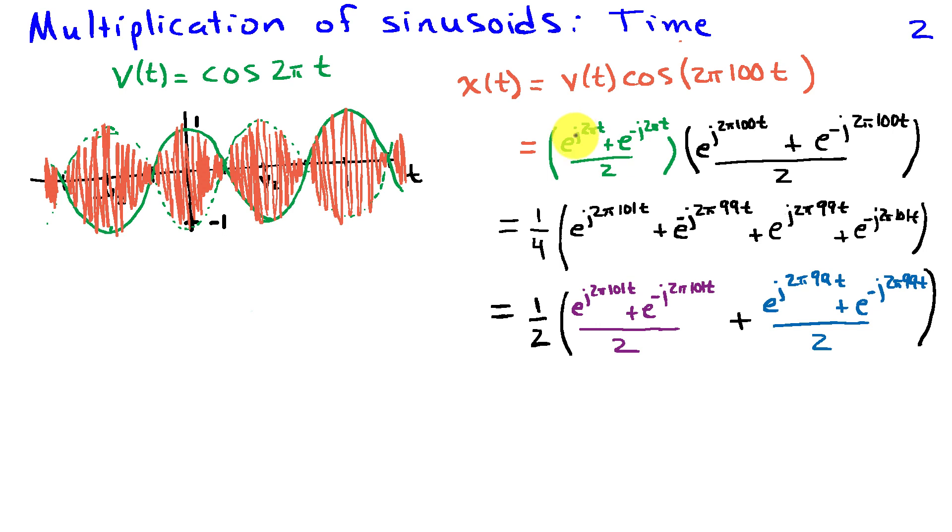We'll take the outer terms, e to the j 2 pi t times e to the minus j 2 pi 100 t. Adding the exponents, we end up with e to the minus j 2 pi 99 times t. Taking the inner terms, I have 100 minus 1 when I add the exponents. So I get e to the j 2 pi 99 t.